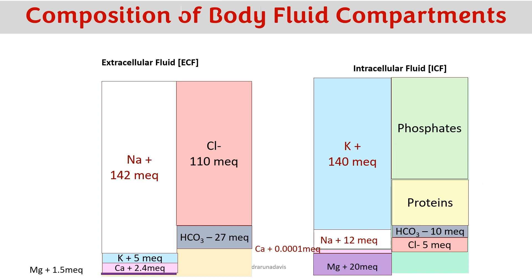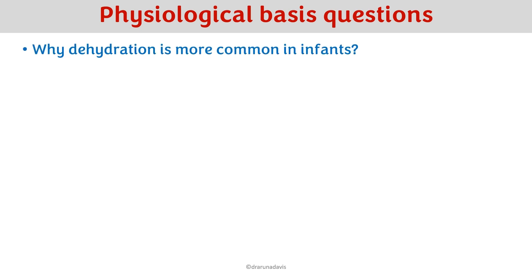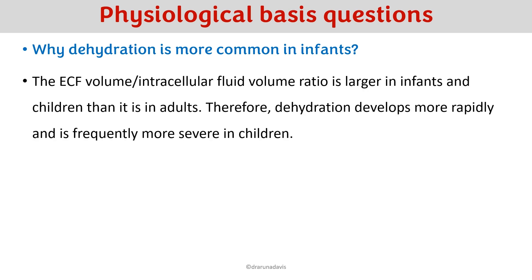A physiological basis question: why is dehydration more common in infants? Because the ECF to ICF volume ratio is larger in infants and children than in adults. Therefore dehydration develops more rapidly and is frequently more severe in children, as they have more fluid in the ECF compartment and their regulatory mechanisms are less developed.